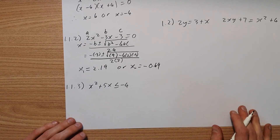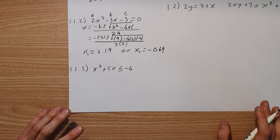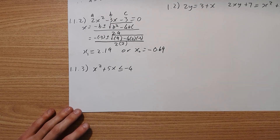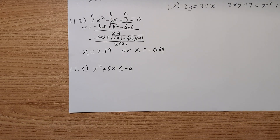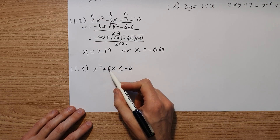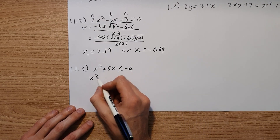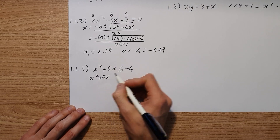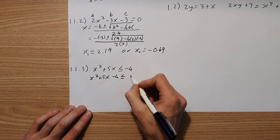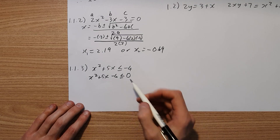That's just some calculator work. Question 1.1.3 is an inequality question. You need to solve this with a graph — you can't solve it any other way. The first thing we're going to do is take that over, so we have x squared plus 5x minus 4 is less than or equal to zero.